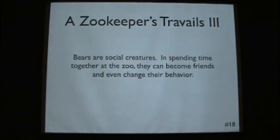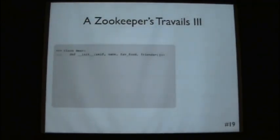Okay. So we can also have instances of our classes talk to one another. So in this example, now, okay, bears are social creatures. They become friends. They can even change their behavior through their friendship. So now we initialize bear with a name, a favorite food, and a list of friends.